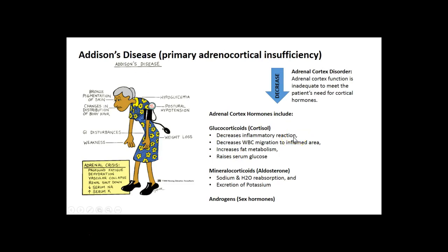Addison's disease is a condition where there is an insufficiency of steroids in the body — it is the opposite of Cushing's. With Addison's, there is a problem with cortisol: a decrease in inflammatory response, increase in fat metabolism, and raised serum glucose. There is also a decrease in aldosterone, which helps with fluid regulation, sodium and water reabsorption, and potassium excretion, as well as a decrease in androgens. These patients can have decreased serum sodium and high potassium levels.